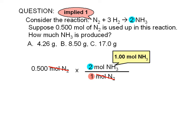But the choices given to us are in grams, so we need to convert our answer to grams. By now, you should know how to do this. We multiply moles of ammonia by the molar mass of ammonia.